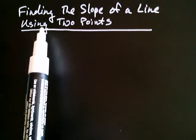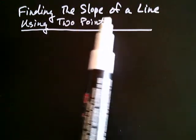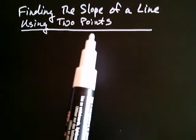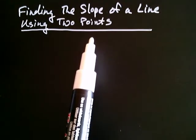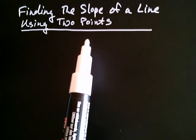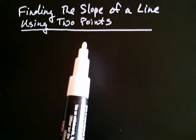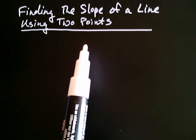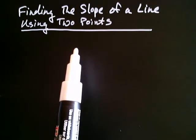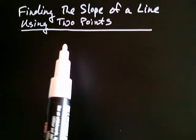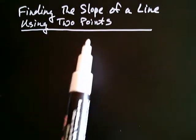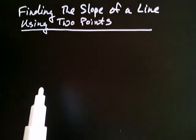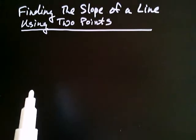Let's talk about finding the slope of a line using two points. It turns out there are a couple of ways of finding the slope of a line, and in this case we'll just be using two points. Let's go ahead and graph a line to see how this works.